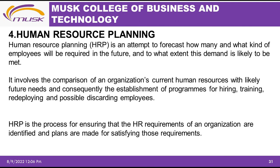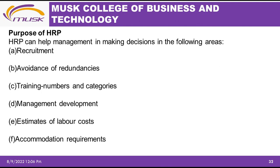Looking at the purpose of human resource planning: HR planning can help management in making decisions in the following areas. Through planning of human resources, we can make decisions on recruitment — when to recruit, how many to recruit, and so on. It also helps with avoidance of redundancies, meaning how do we avoid releasing employees because we do not need them.